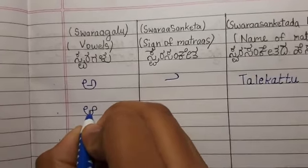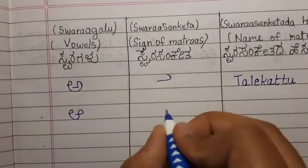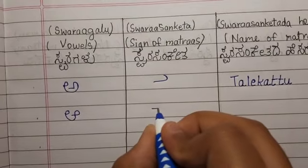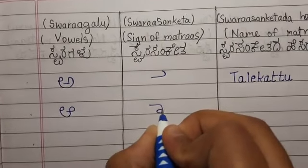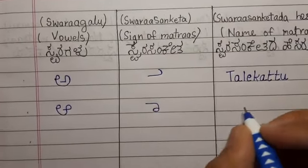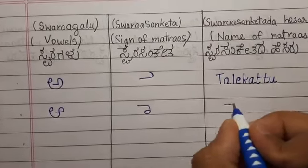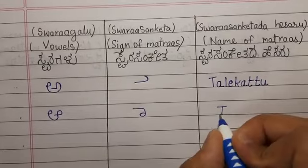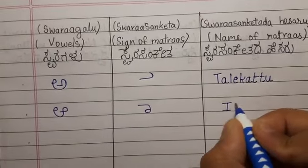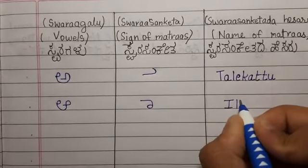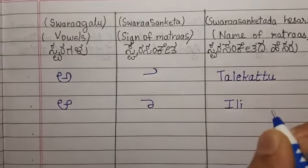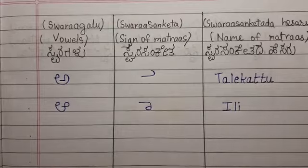AA is equals to Illi. Matra of AA is Illi.